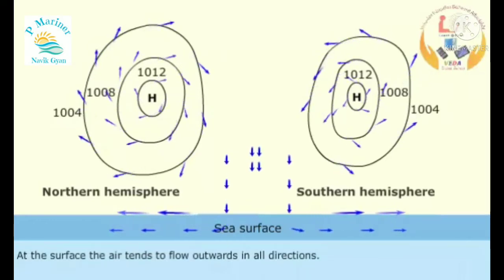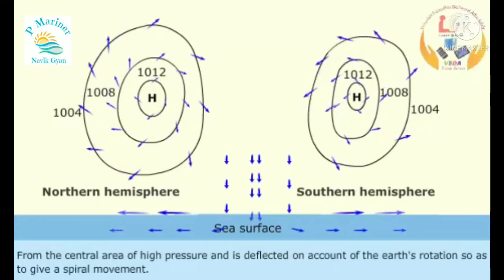At the surface, the air tends to flow outwards in all directions from the central area of high pressure and is deflected on account of the Earth's rotation so as to give a spiral movement.